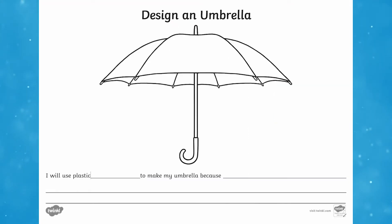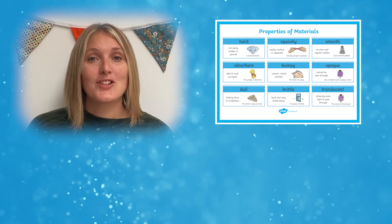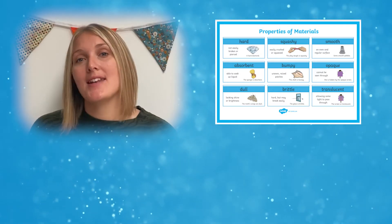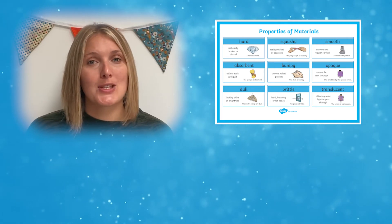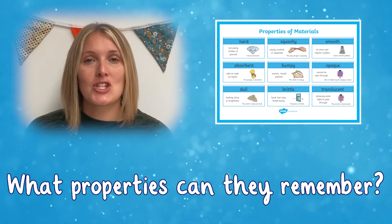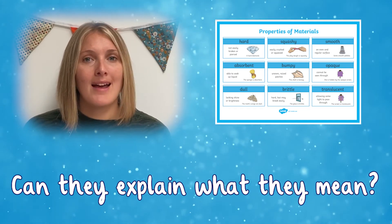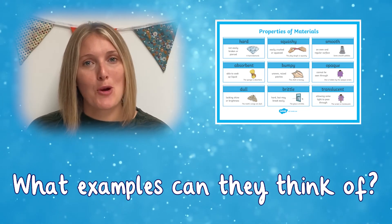Why not look at some of the fantastic science writing frames we have on the website? You can challenge the children to design a new object and for them to identify the important properties the material would need to have. And of course, at the end of a science topic, it provides a great opportunity for some quickfire assessments. What properties can the children remember? Can they explain what they mean? Can they think of an example for each property?